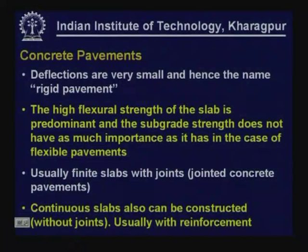Concrete pavements are usually finite slabs with joints. You will see a number of joints in a concrete slab — these are typically called jointed concrete pavements. You can also have continuous pavements without joints, though not very common in India. To avoid joints — because joints are normally difficult to maintain and are places of weakness — if one wants to construct pavements without any joints it can be done, but usually they are reinforced and called continuously reinforced concrete pavements.